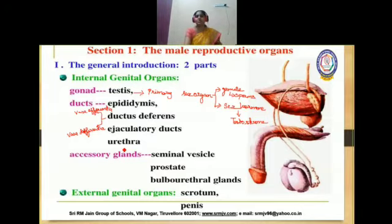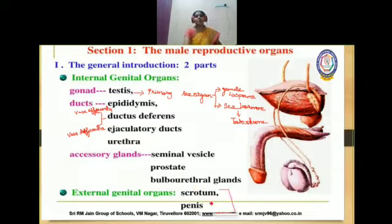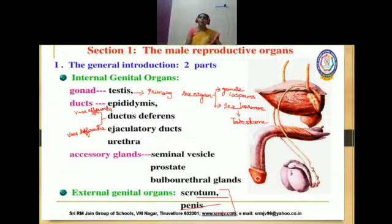Accessory glands are associated with our male reproductive system. We have three important glands: the seminal vesicle, prostate gland, and bulbo-urethral gland. They have their own importance, which we will see in detail. For external genitalia, there are two important organs — scrotum and penis. Here scrotum is not shown in the picture; this structure shown is called penis.